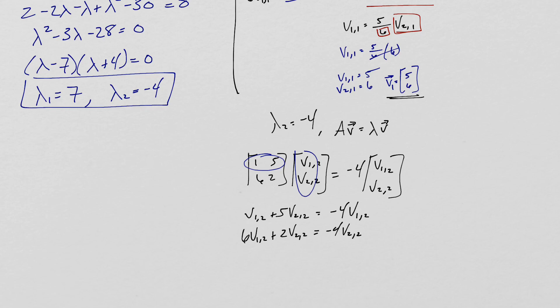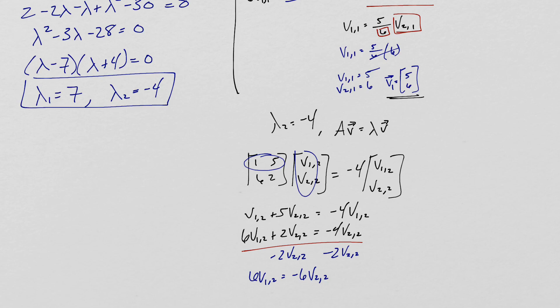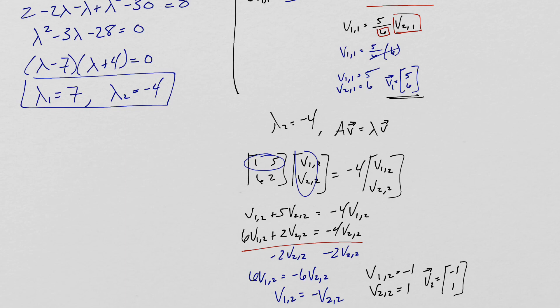These are again redundant equations, so I'll just use the second one. Subtracting 2V₂,₂ from both sides simplifies to 6V₁,₂ equals negative 6V₂,₂, which means V₁,₂ equals negative V₂,₂. If we let V₂,₂ equal 1, then V₁,₂ equals negative 1. So eigenvector V₂ equals [negative 1, 1]. A scalar multiple such as [1, negative 1] is equally valid as an eigenvector for this problem.